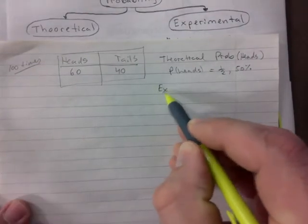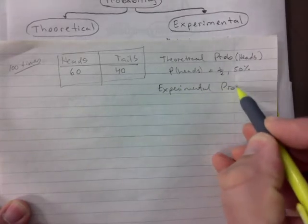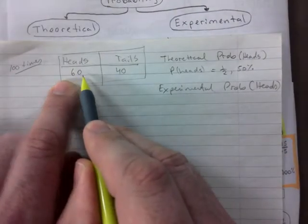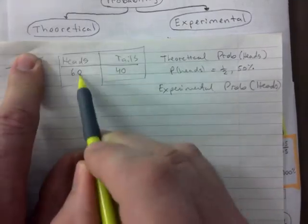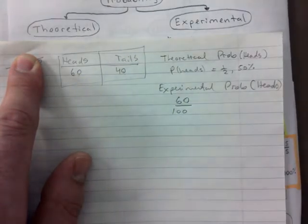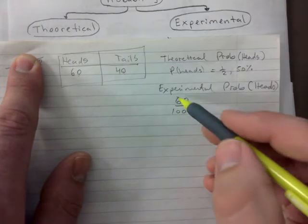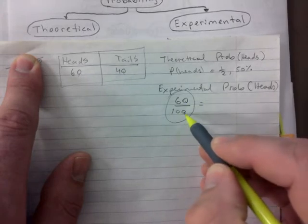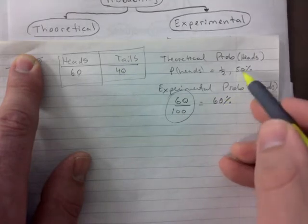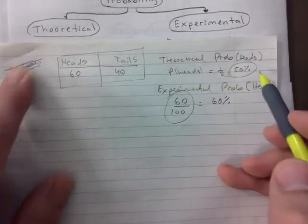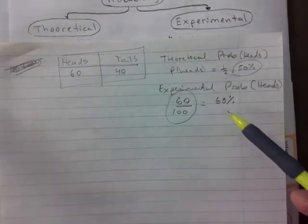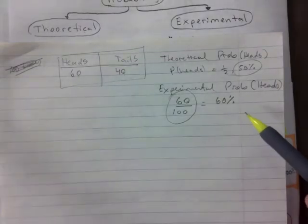But what if the question said: what's the experimental probability of the coin landing on heads? You would have to — if they don't give you the total — add up. So sixty occurrences out of sixty plus forty is a hundred. This is the experimental probability, and sixty divided by a hundred is sixty percent. You might wonder: why are they different if in theory it's supposed to be one out of two?